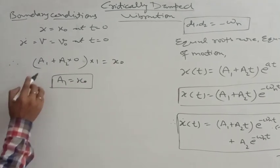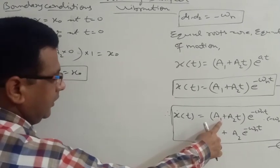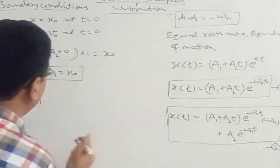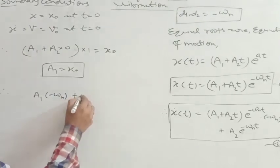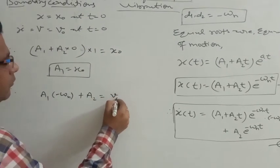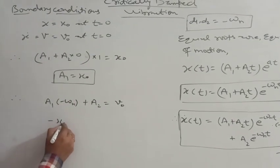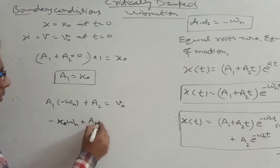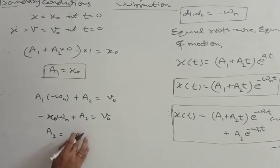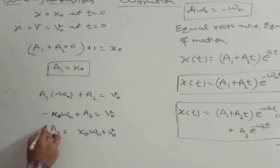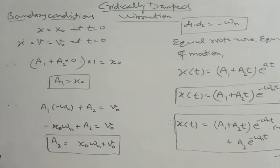Applying the second boundary condition to the velocity equation: at t=0, the exponential is 1 and t=0, so we get a1·(−omega_n) plus a2 equals v0. Since a1 equals x0, substituting gives −x0·omega_n plus a2 equals v0, therefore a2 equals v0 plus x0·omega_n. The two constants are determined from the boundary conditions.